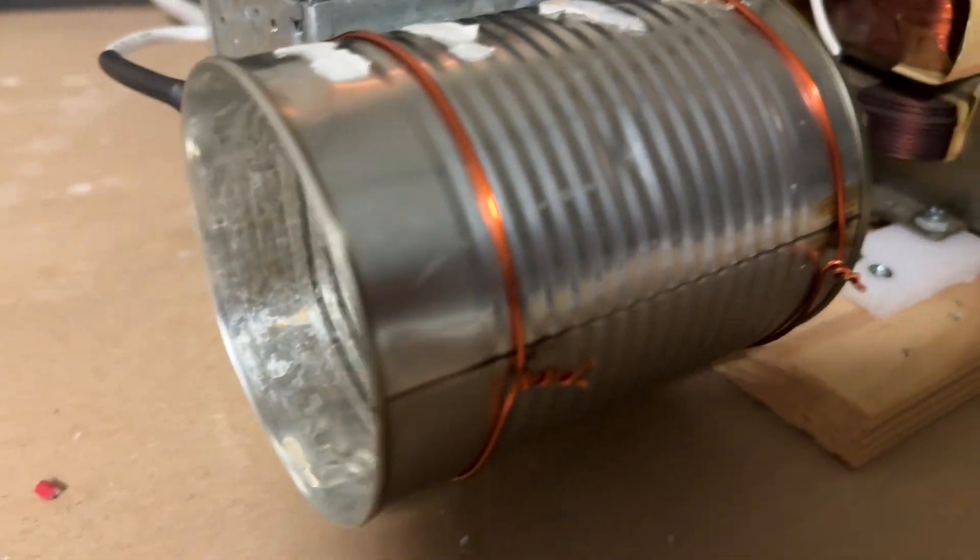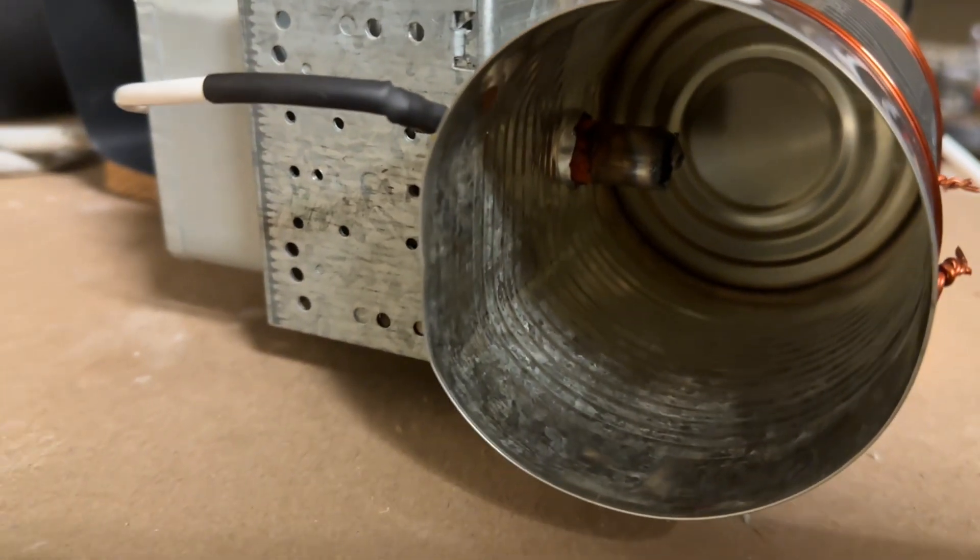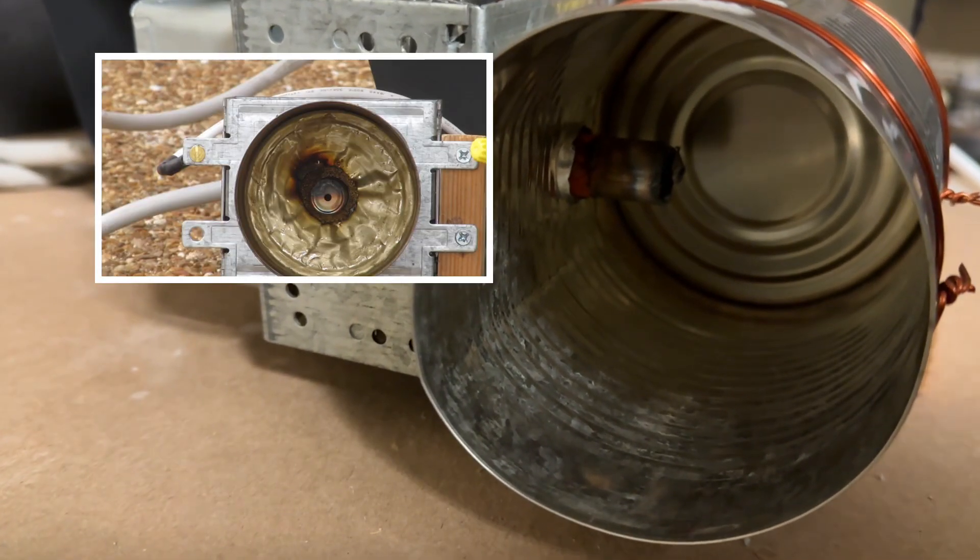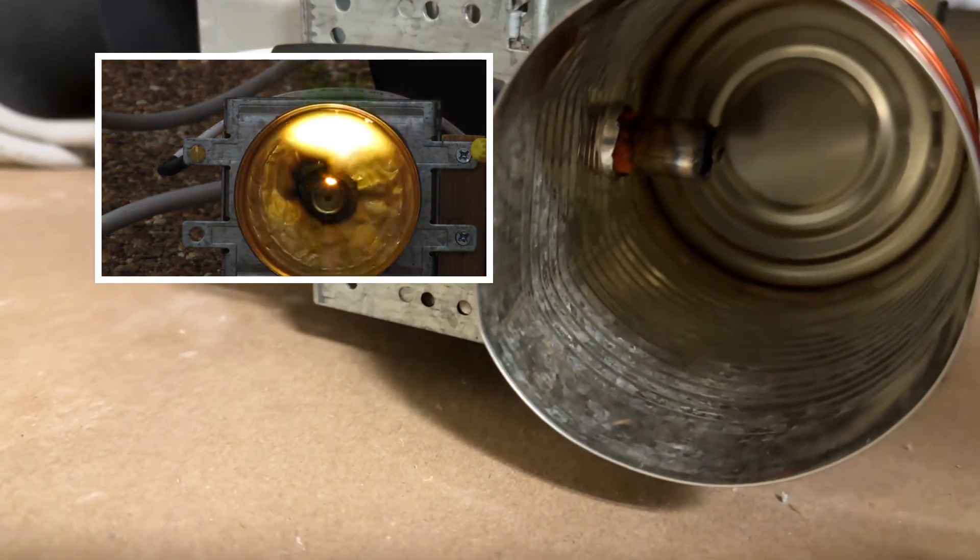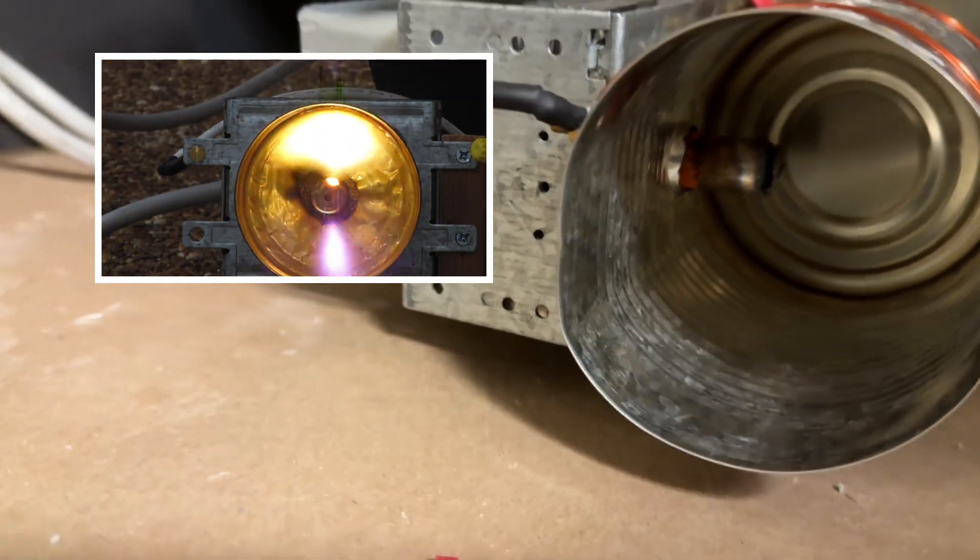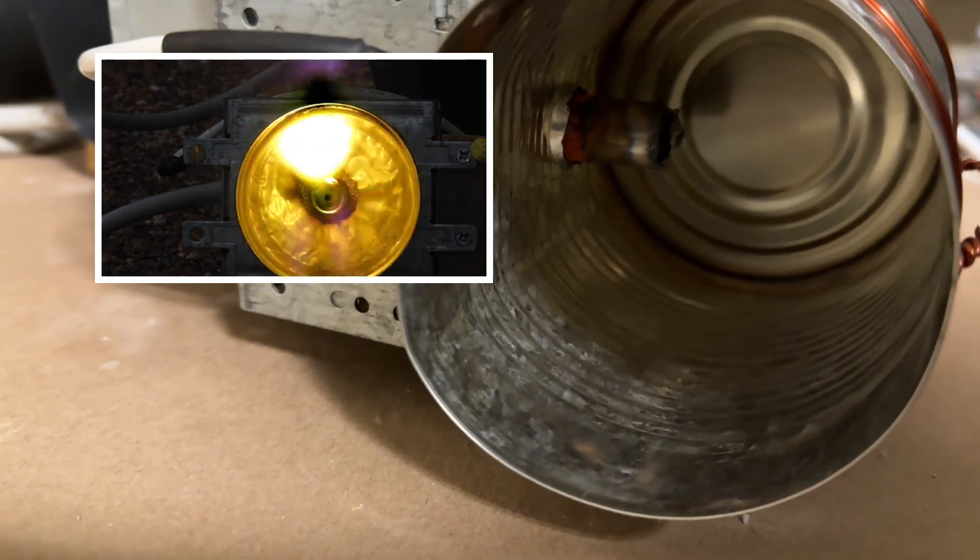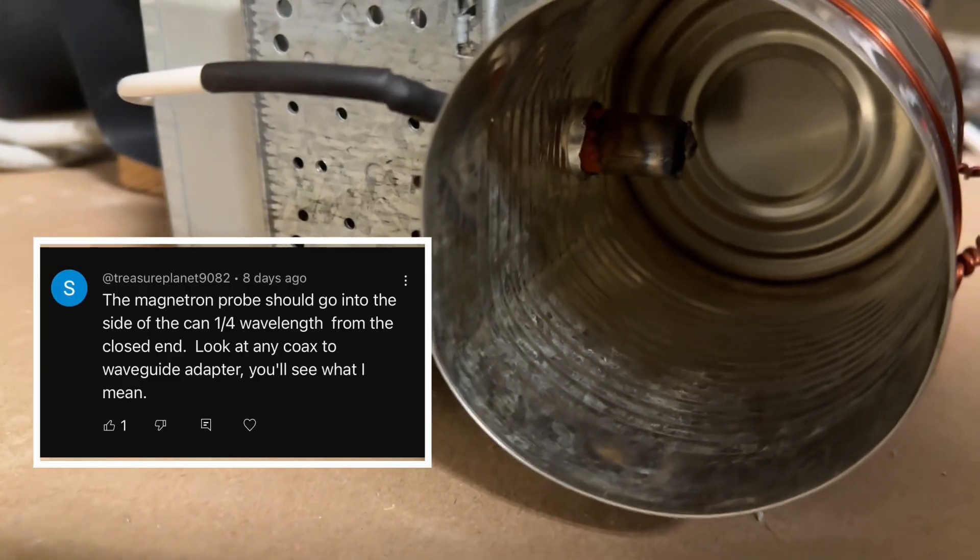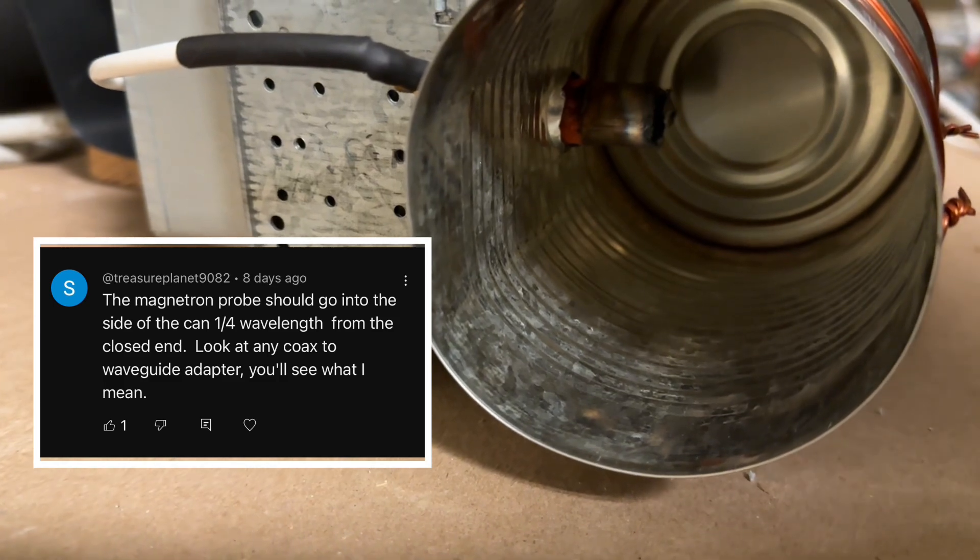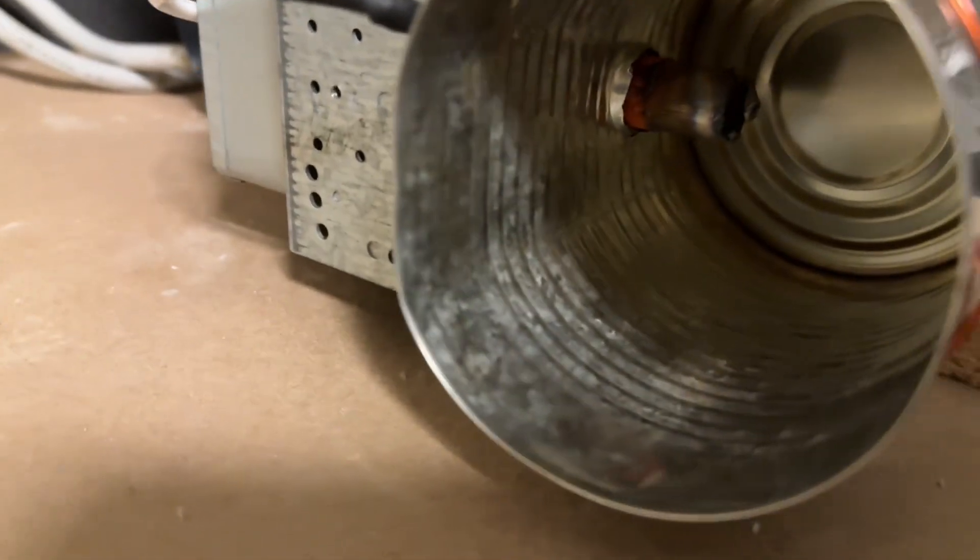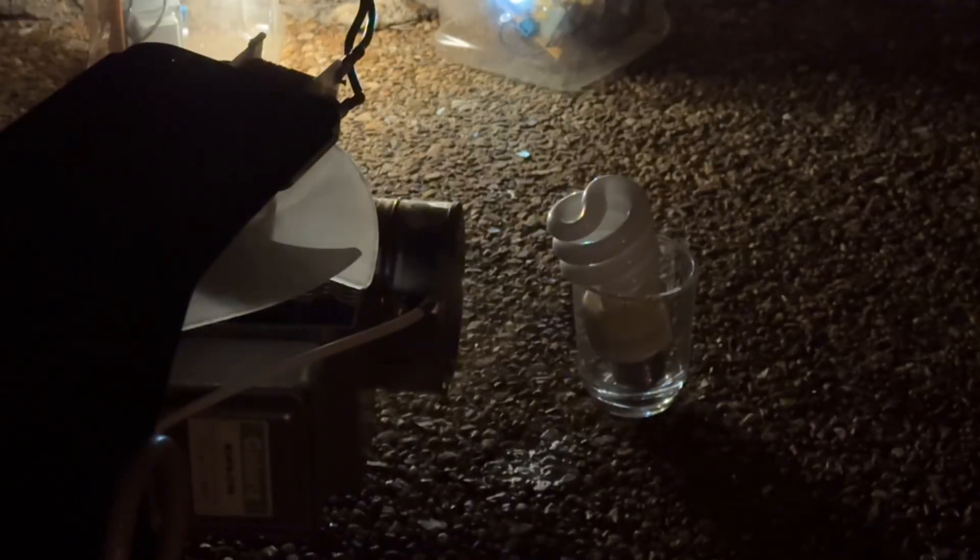With the can, with the hole drilled in the bottom of the can in my earlier video, a big flame was coming right out of the magnetron and it was likely damaging the magnetron. Treasure planet 9082 very helpfully suggested that the output of the magnetron should be three centimeters or quarter wavelength on the closed end of the can. Going to turn it on right now.